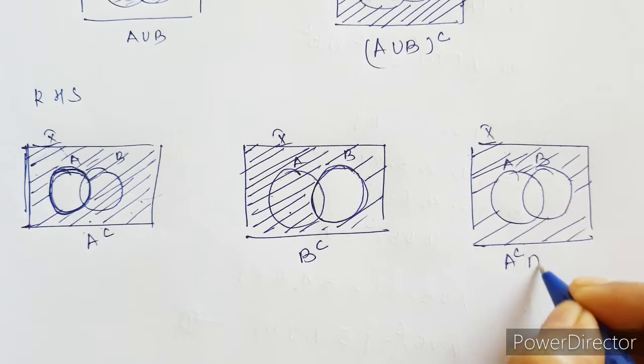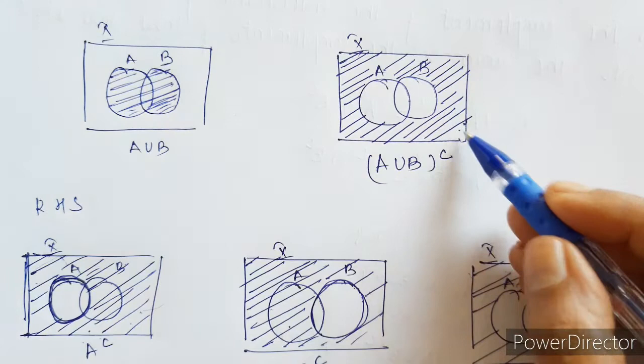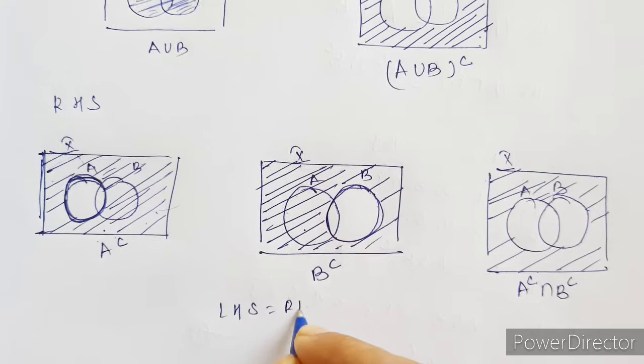Now compare the left hand side with the right hand side. We can say left hand side equals right hand side, and hence De Morgan's first law is proved.